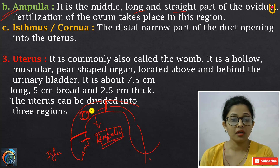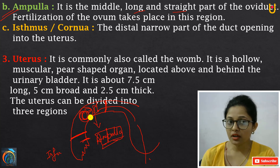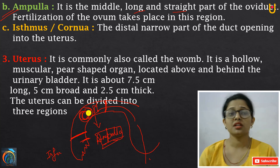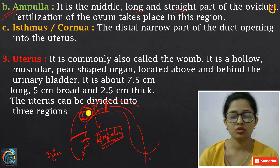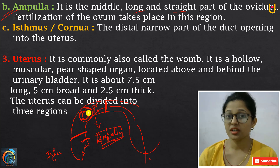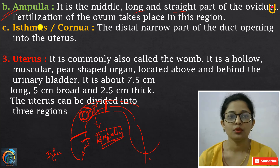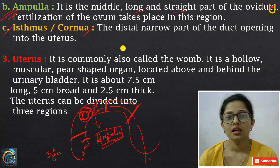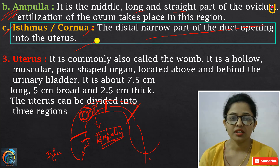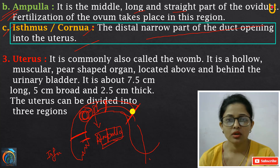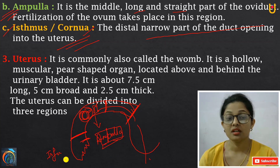When asked where fertilization takes place, the answer is the fallopian tube — specifically the ampulla part. The third part is the isthmus: the distal narrow part of the duct opening into the uterus.